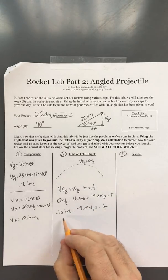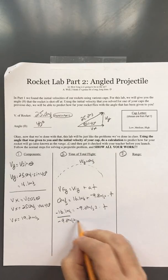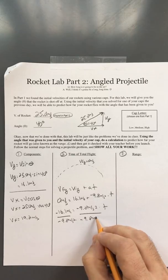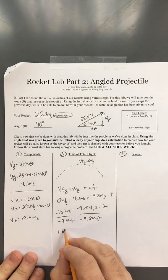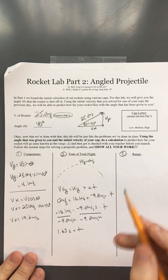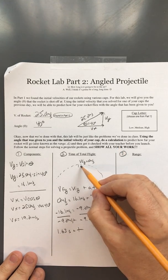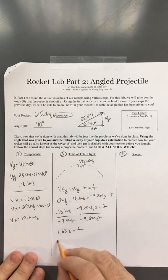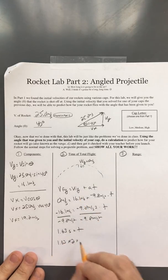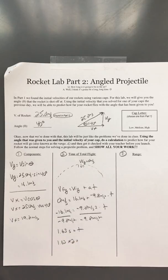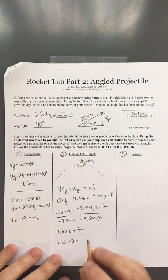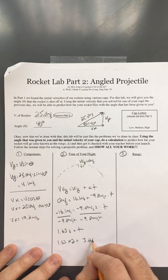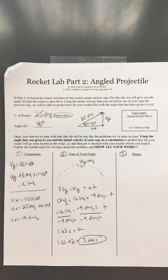We get a time of 1.63 seconds. Now we're looking for total time, and this is just the time to the top. So we take 1.63 seconds times 2, and we get approximately 3.26 seconds for our total time in the air.